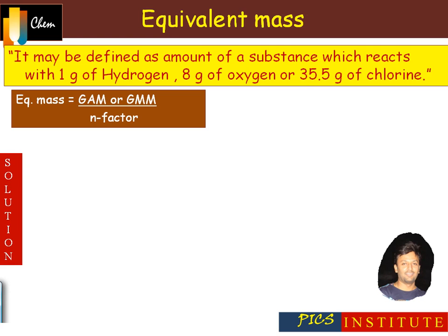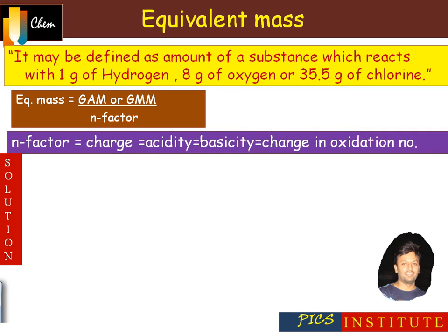So if we know the n-factor, we can easily find out the equivalent mass. The n-factor may be charge, acidity, basicity, or change in oxidation number. Let's understand each one by one.